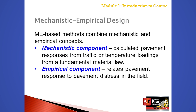Any mechanistic empirical pavement design procedure includes two major components: a mechanistic component and an empirical component, which need to be combined to predict pavement distress. The mechanistic component includes a pavement response model to calculate pavement responses of stress, strain, and deflection from truck loads and environmental loads. It also includes the use of a fundamental material law or performance property using a critical pavement response. The fundamental material law will be defined in module two and are all discussed in chapter five of the MEPDG Manual of Practice.